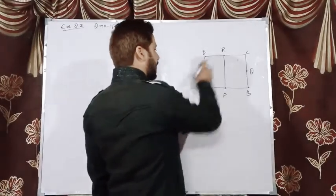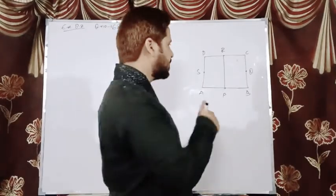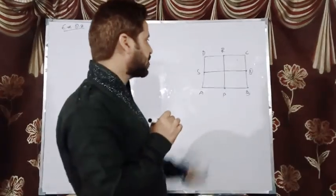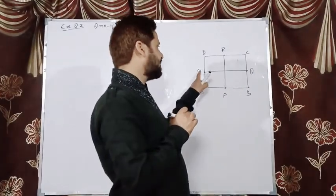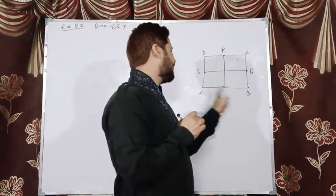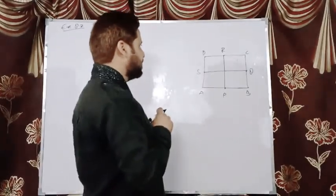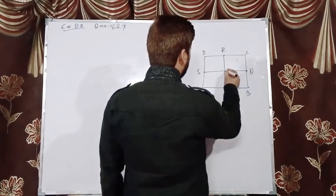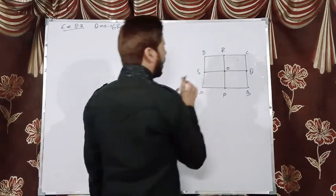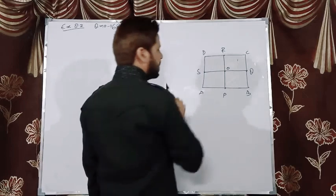We need to show that the line segment connecting the midpoints of the opposite sides of this quadrilateral bisect each other. PR is the line segment connecting the midpoints of opposite sides AB and DC. Similarly, SQ is one more line segment connecting the midpoints of the opposite sides AD and BC. We have to show that PR and SQ bisect each other at point O, meaning OP = OR and OS = OQ.